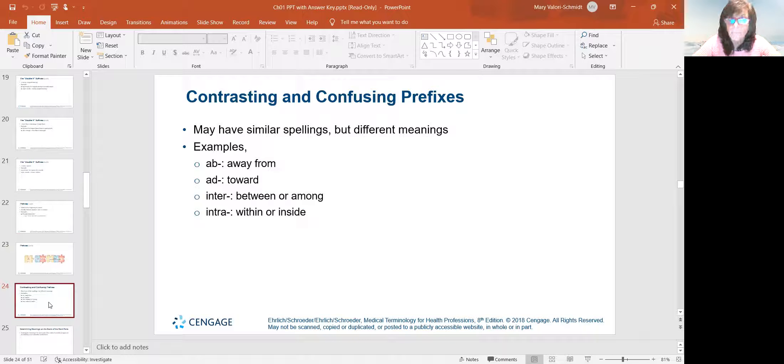Sometimes they can be confusing. They have similar spellings, but they have different meanings. Like the examples, the first two are ab and ad. Ab means away from and ad means toward. So a good example for that is abduction. If I am abducting my arms, I'm spreading them apart. Or if I am adducting my arms, I'm bringing them closer together. So add together. It's a good way to remember that. And then we have inter, which is between. And then we have intra, which is inside something. So if I give you an intravenous, I'm going into your vein. So it's not intervenous. We don't go between the veins. It's intravenous into the vein. So inter means between. Intra means inside.